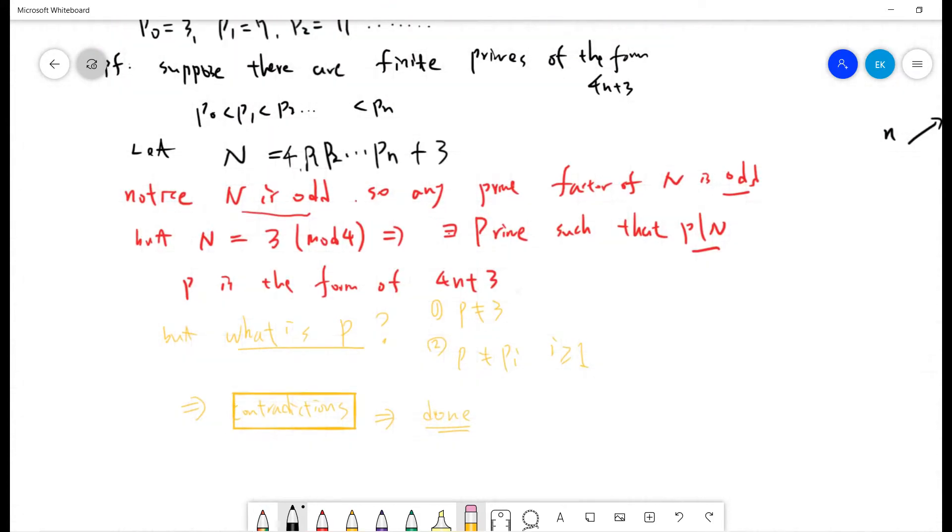But what is p? So first, I want to prove that p cannot be 3. This is obvious. If 3 divides N, then 3 will divide N minus 3.